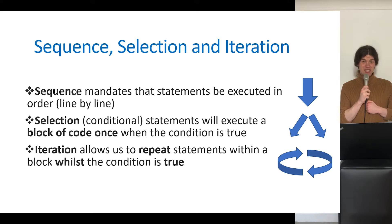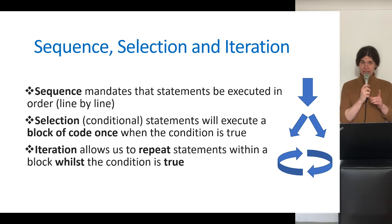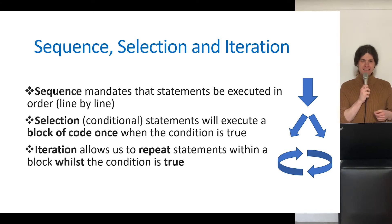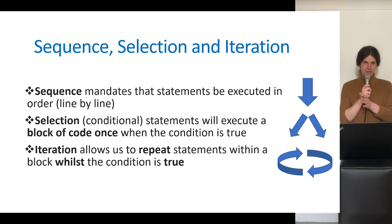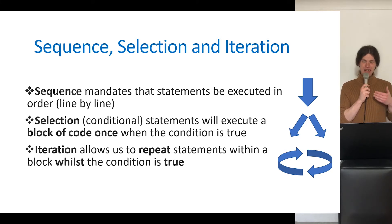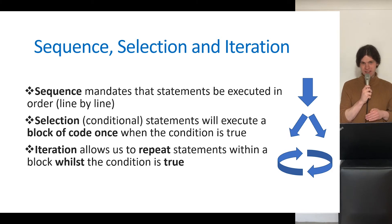We've also had a look at selection, which allows us to run a block of code just once providing that the condition is true. But that's different to iteration, which is where we repeat the block of code whilst the condition is true. With selection we choose between different blocks of code and run them once — whether that's if, else if, or else — but with iteration we repeat a block of code whilst the condition is true.